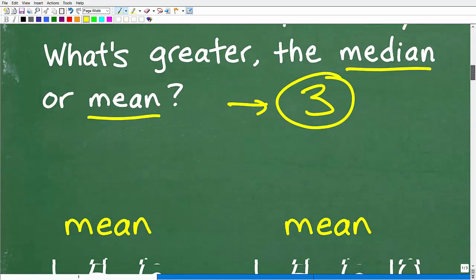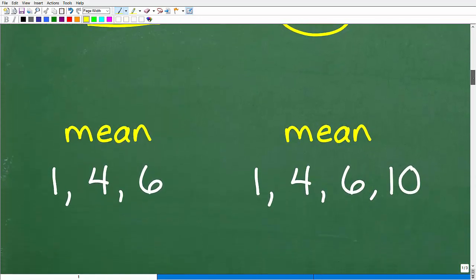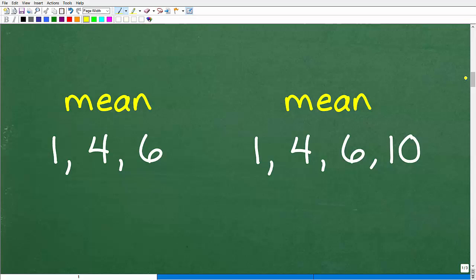These words are often confused. Now, here is a little pop quiz for you. So we have the mean. Let's talk about the mean. So we have some data here, some information. So we have 1, 4, 6.